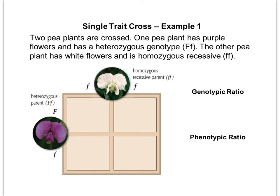The other pea plant has white flowers and is homozygous recessive. We've set them up on the sides: there's the capital F, the lowercase f, and then there's our homozygous recessive parent. It doesn't matter whether we put this one across the top or down the side — we can flip it and get the same results.